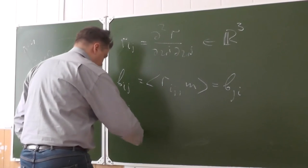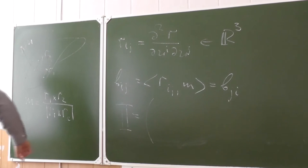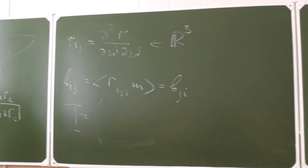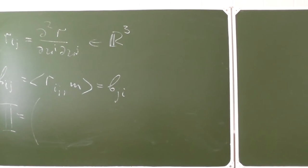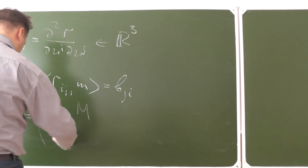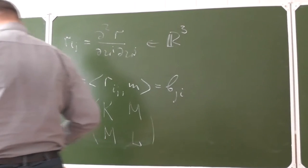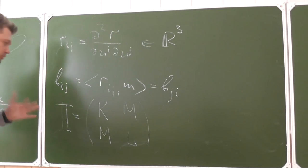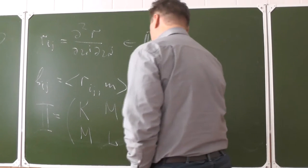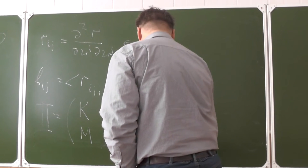The second fundamental form is just the standard scalar product in ℝ³ of the second derivatives with the normal vector n. It is easy to see that this matrix is symmetrical because simple partial derivatives commute. However, this matrix cannot in general be positively defined. The classical notation uses letters L, K, and M — this is Gauss's old-fashioned notation. So now we have the first quadratic form and the second quadratic form.